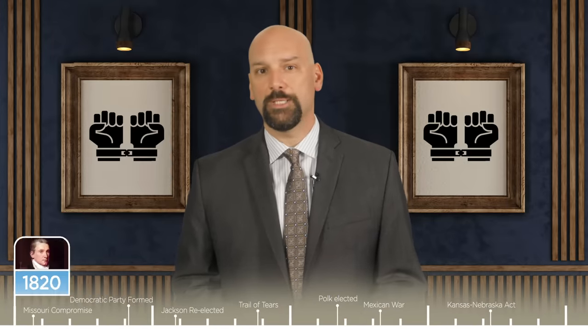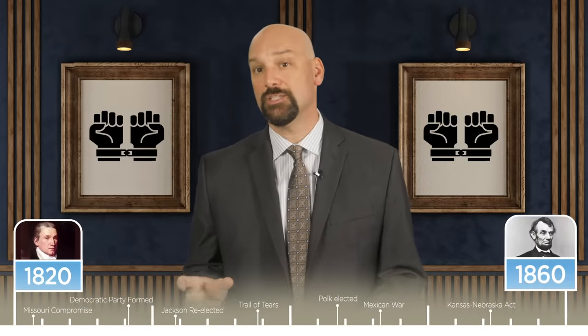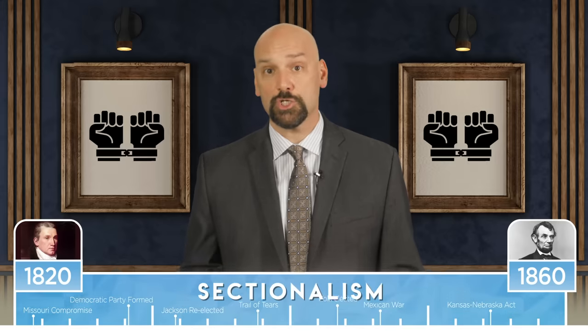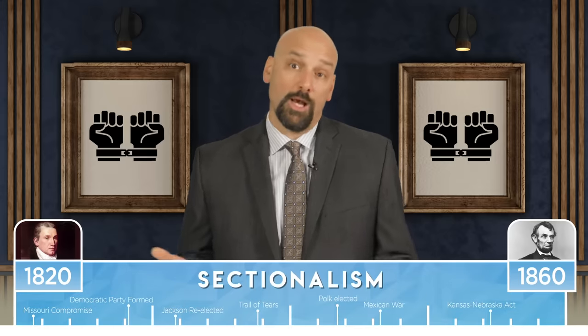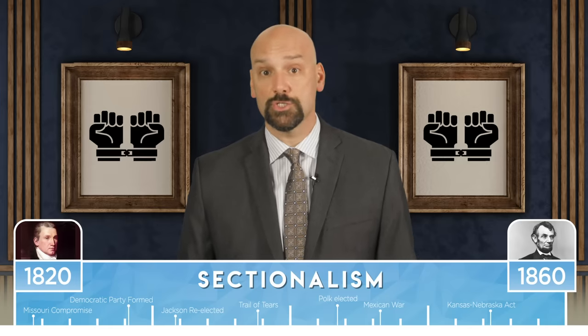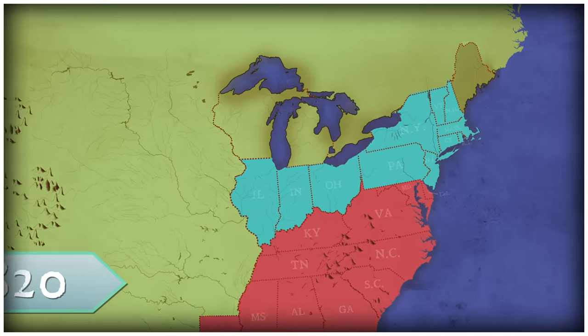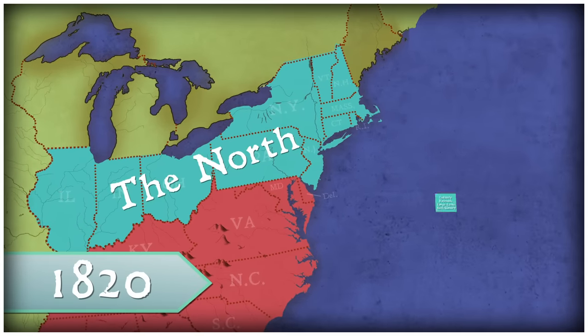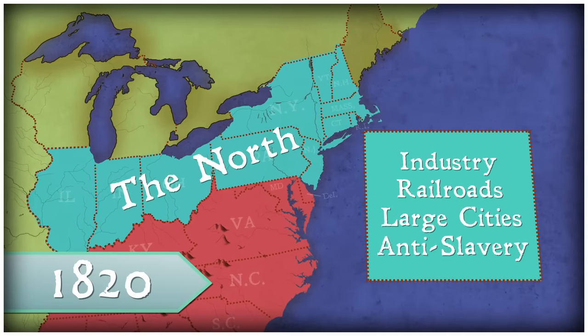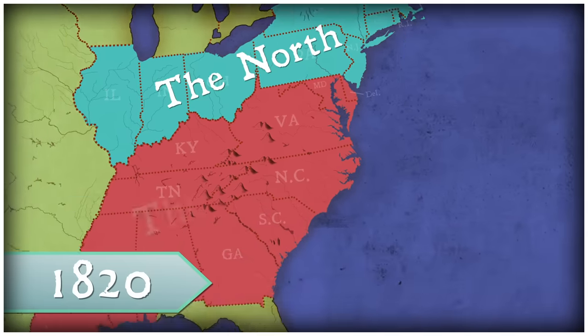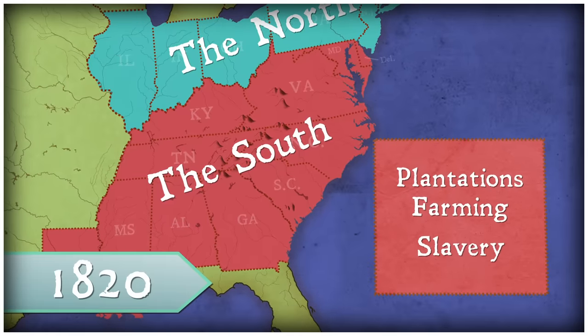Today we'll be looking at the time period between 1820 and 1860. This period of time is called sectionalism, because the United States was really divided into sections based on economies and occupations. We had the North, whose 11 states had industry, railroads, and big populous cities in common — these states were anti-slavery. And then there was the South, whose 11 states were based on large plantations and farming — these were the slave-owning states. So we're pretty balanced: 11 free states and 11 slave states.